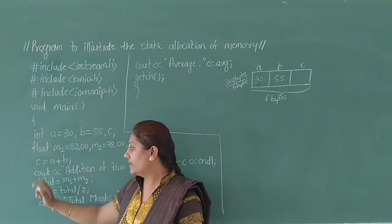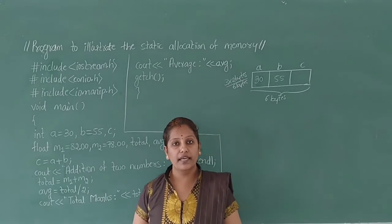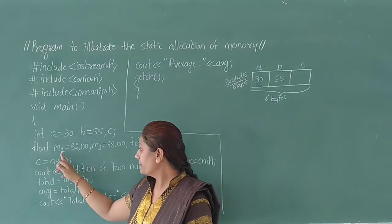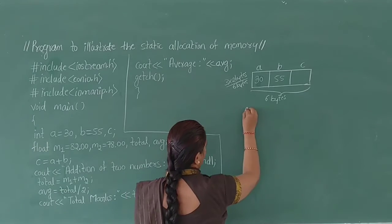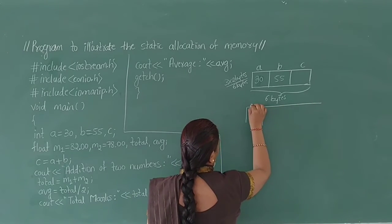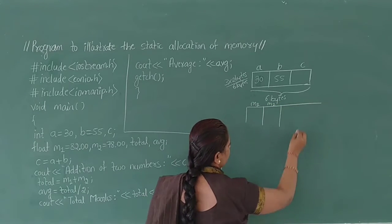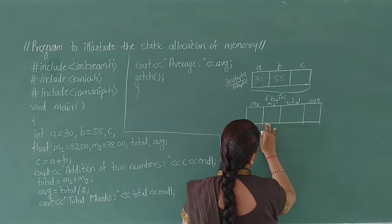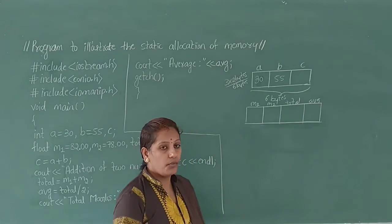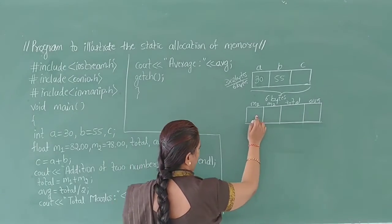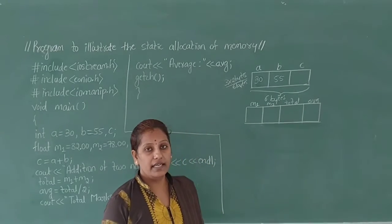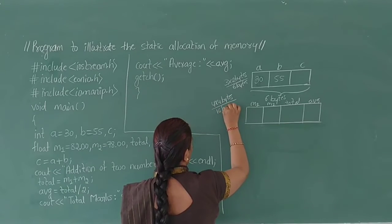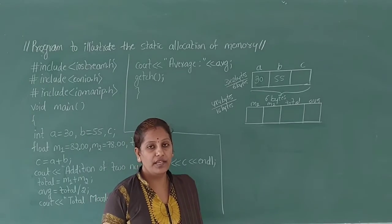These four variables — m1, m2, total, and avg_average — are declared with the data type float. A float variable reserves four bytes of memory for a declared variable. It creates static memory allocation for m1, m2, total, and avg_average. It reserves four bytes of memory space for each variable. Four variables into four bytes — total it reserves sixteen bytes of memory space for variables declared with data type float.